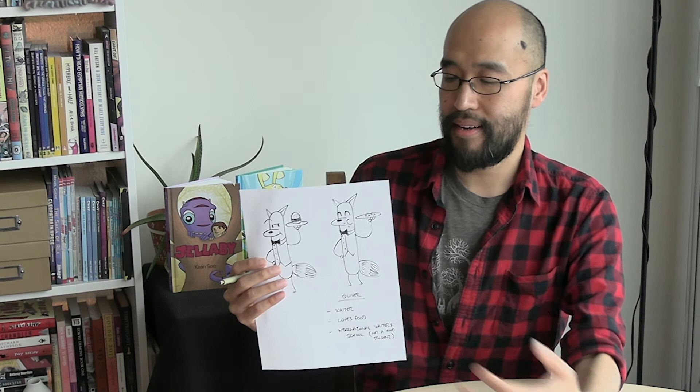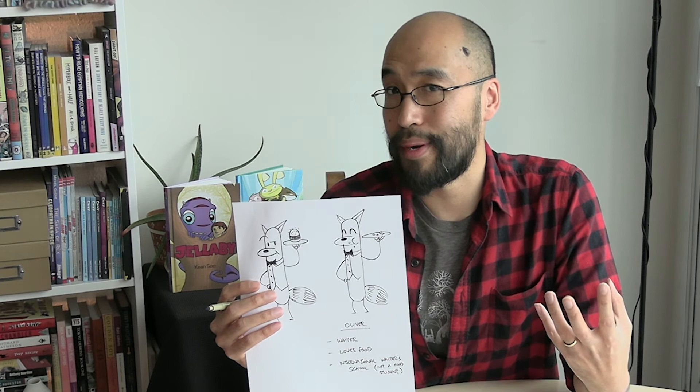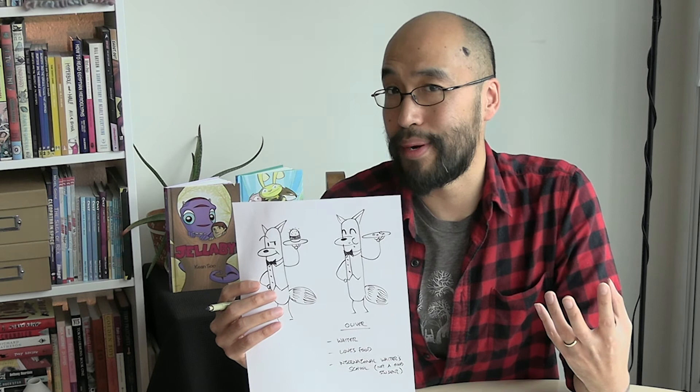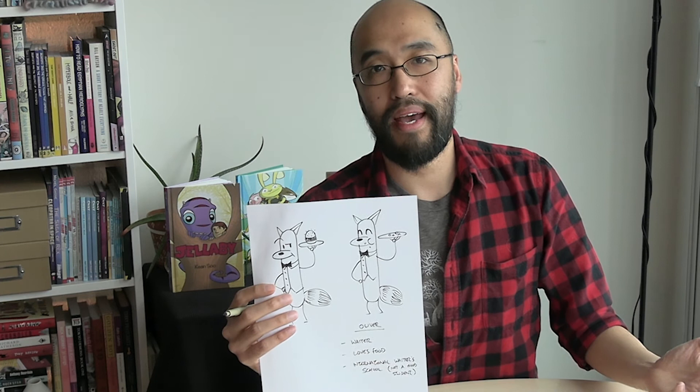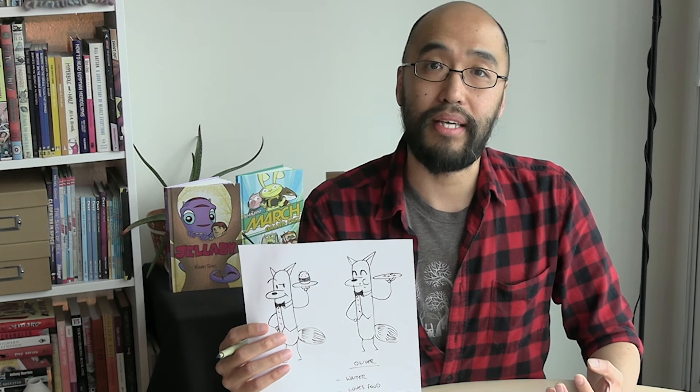One of the things I always like to do when creating these characters is jot down notes about who they are. In this case, Oliver the dog is a waiter — he loves food. Maybe he's a waiter in training going to the international waiter's school, and because he's eating all the food, maybe he's just not a very good student. I want you to create your own characters, think about the stories, and add details to give them more life.